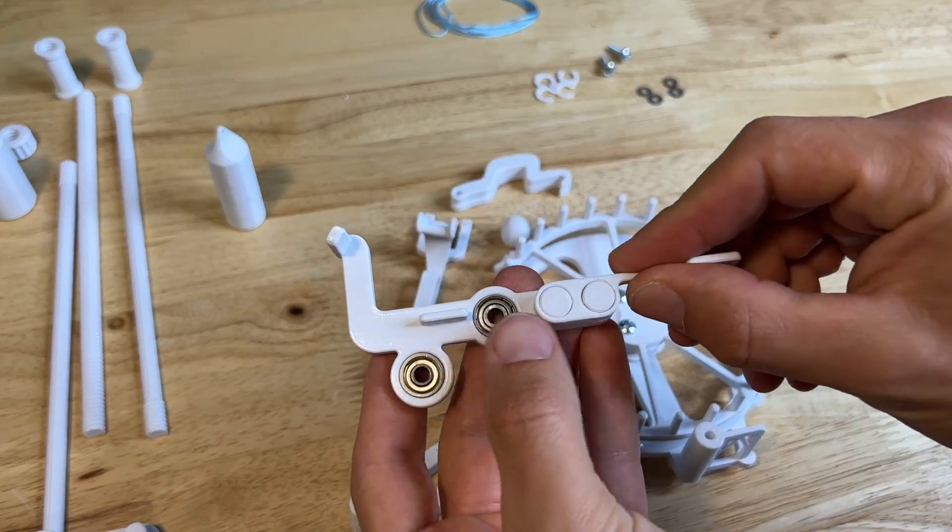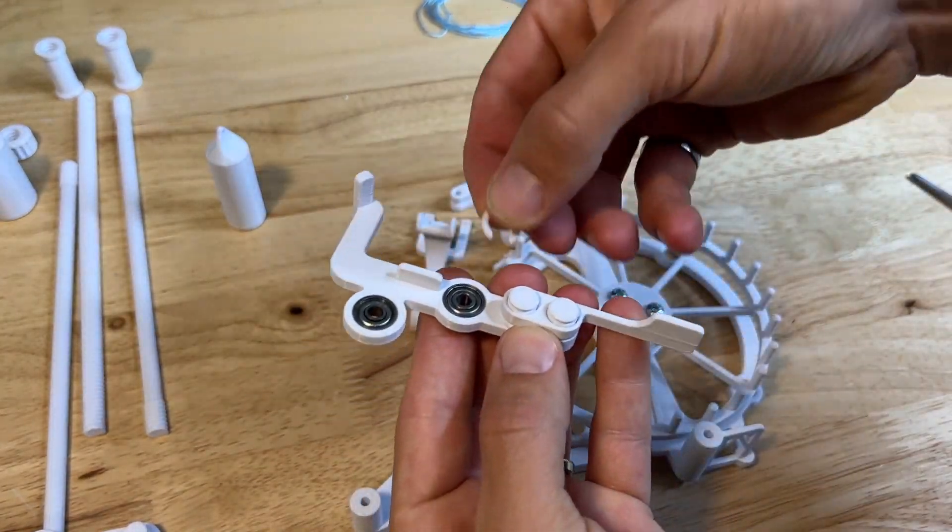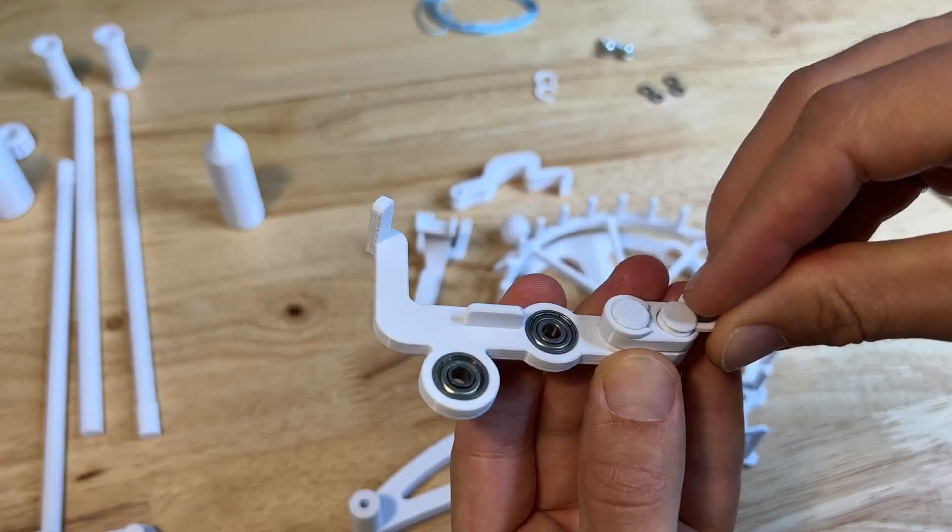Next, grab this paddle. This goes onto the trigger in this orientation. Use two C-clamps to hold that in place.